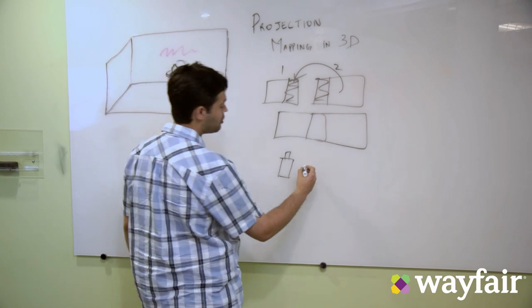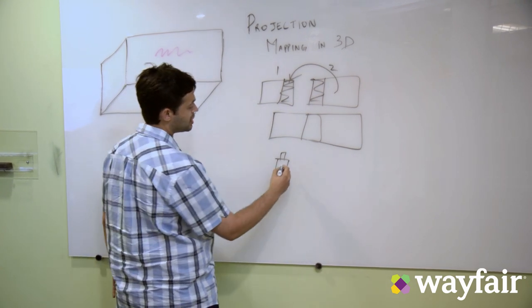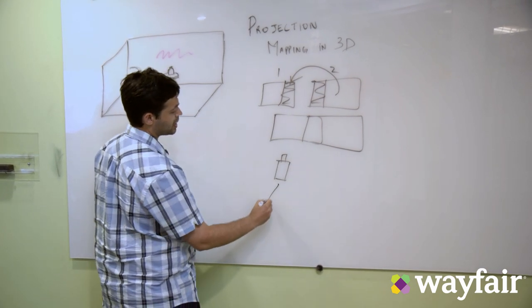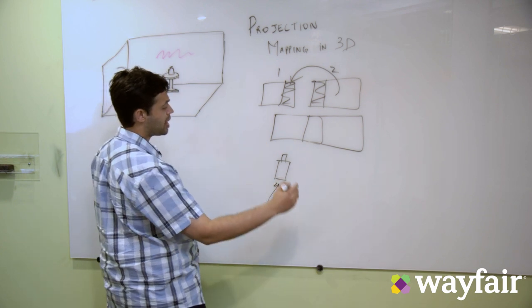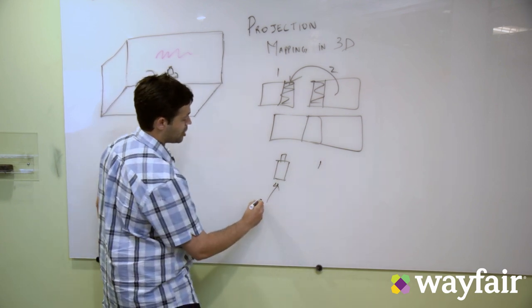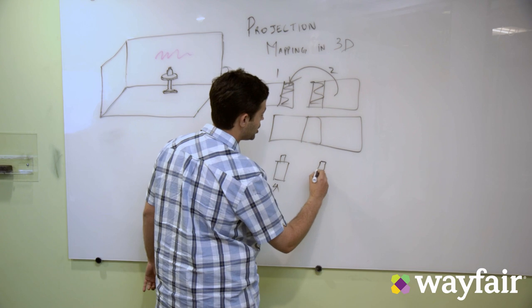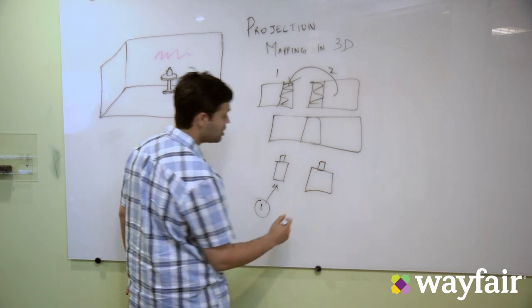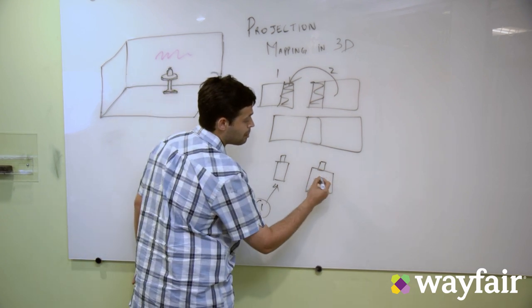One way to go about it is take one image from one camera angle, say camera angle one, and then take another image from a different camera angle.